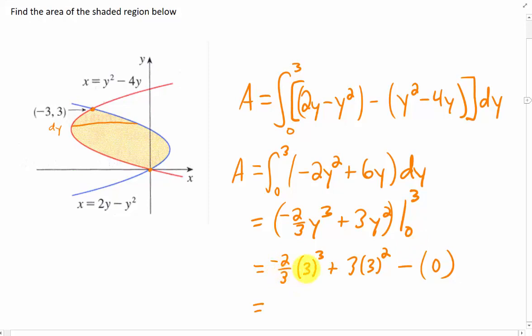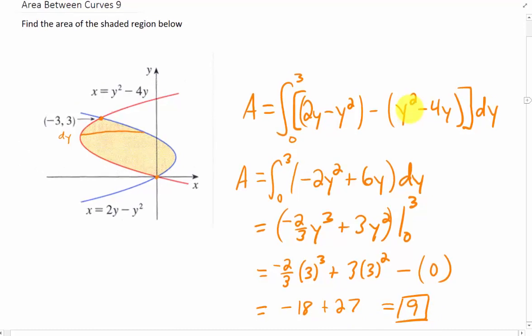We get negative 2/3 times 27, which is negative 18 if we cancel the 3 in the denominator with one of the 3s in the numerator, and this piece gives us plus 27. The final answer is 9.